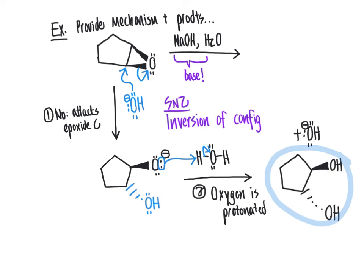Now that we've reached the end of this video, you should be able to predict what products are created from reactions where an epoxide is present with a basic nucleophile. This includes recognizing that the reactions are stereoselective — predicting the inverted configuration of the final product — and recognizing the regioselectivity: for asymmetrically substituted epoxides, the basic nucleophile attacks at the less sterically hindered carbon, as is typical for an SN2 type mechanism.